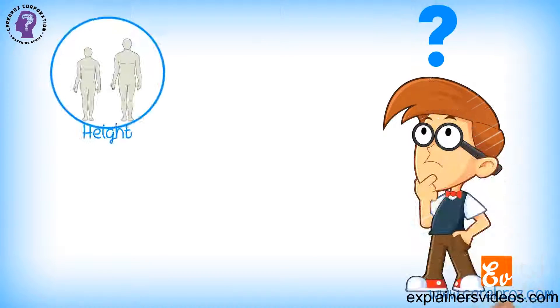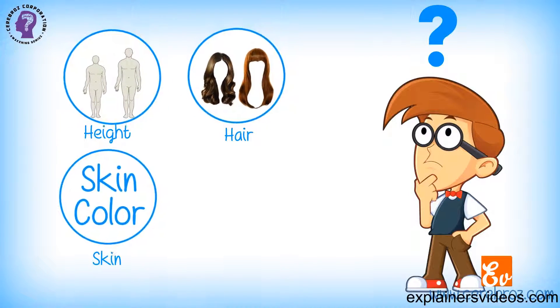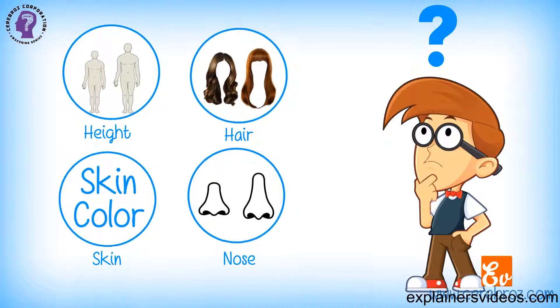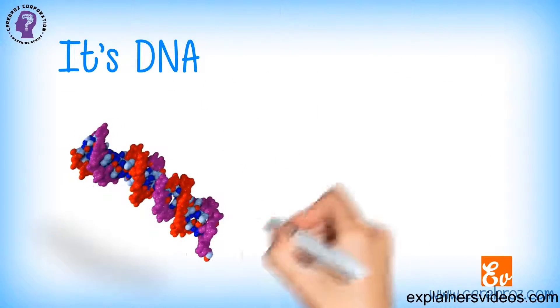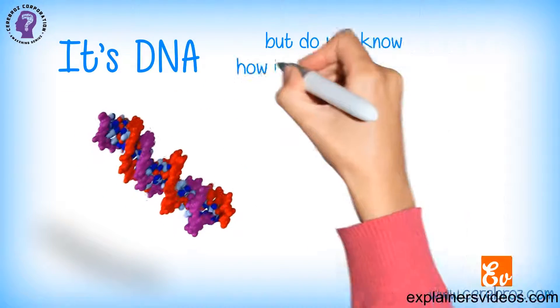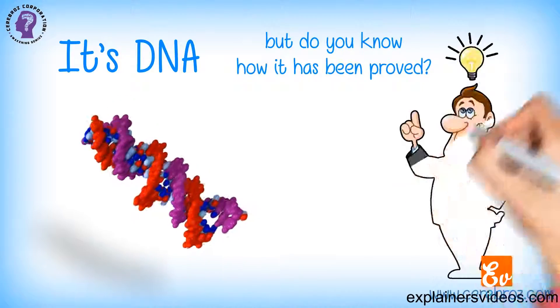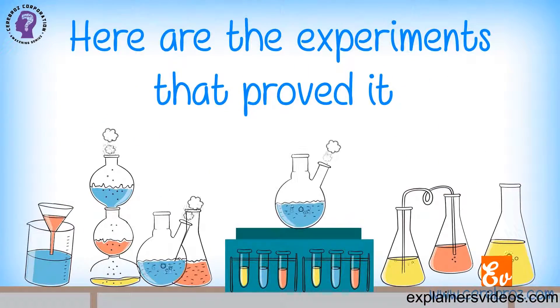Have you ever wondered what determines your height, hair, and skin color, and even the size of your nose? It's DNA, the genetic material of cells. But do you know how it has been proved? Here are the experiments that proved it.